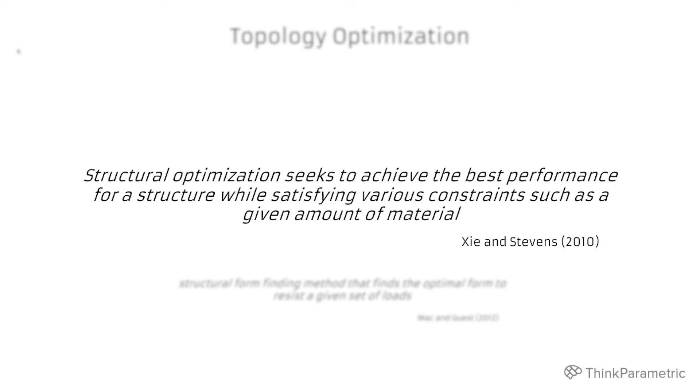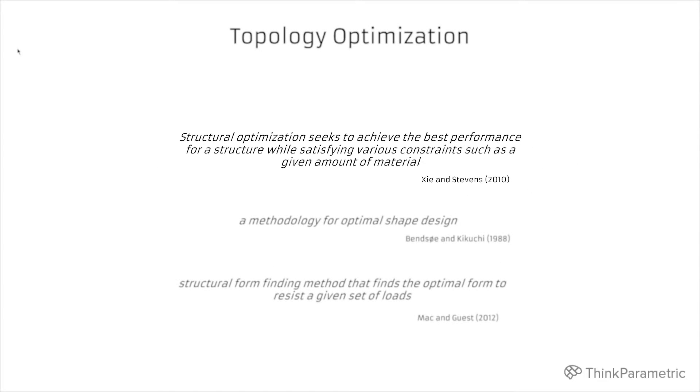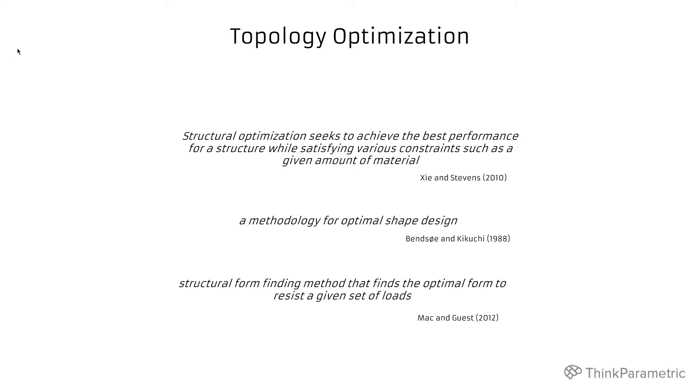The first one: Structural optimization seeks to achieve the best performance for a structure while satisfying various constraints such as a given amount of material. So basically we try to find a shape for a structure that has maximum stiffness within given amount of material.